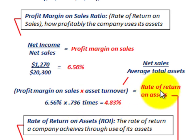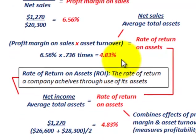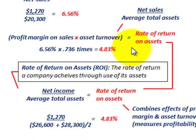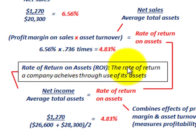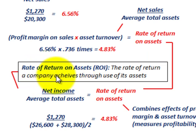That 4.83% is the rate of return on our assets. We can also calculate this rate of return on assets — or return on investment — another way. It represents the rate of return the company achieves through the use of its assets.